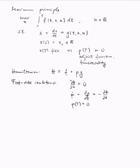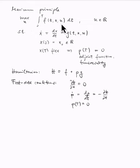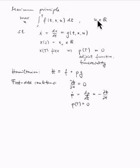To fix notation, I've written down the maximum principle, which is the workhorse method I'm going to apply. We have an objective we want to maximize with respect to a function u — the control, which is a function of time and is what we can choose. The objective integrand depends on this chosen function, and we want to maximize the integral over the objective integrand on the interval zero to capital T. The control can take any real value; I'm not looking at a restricted control region.